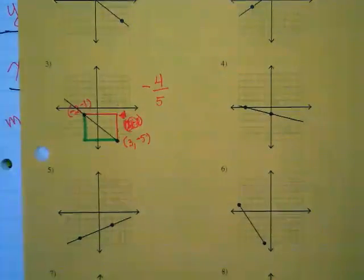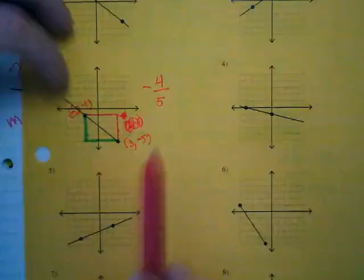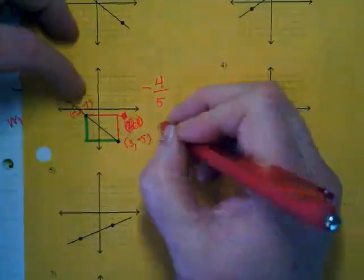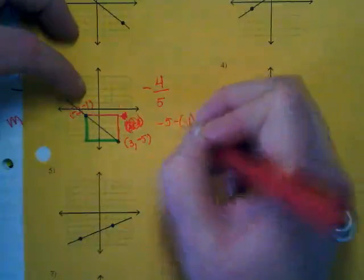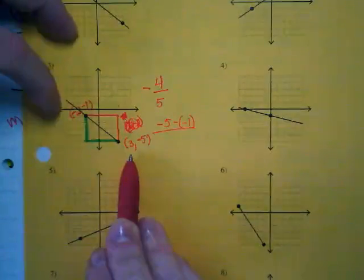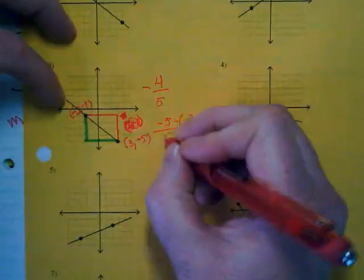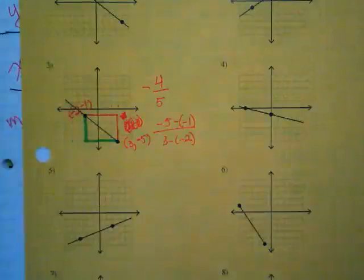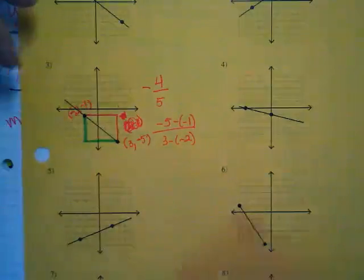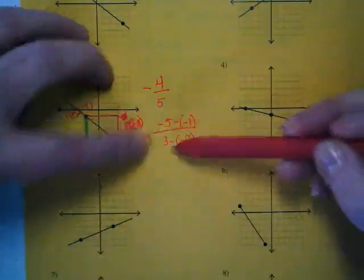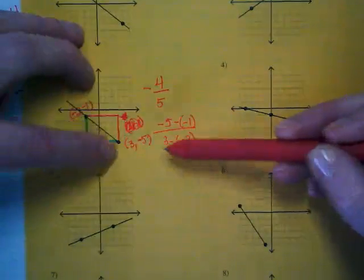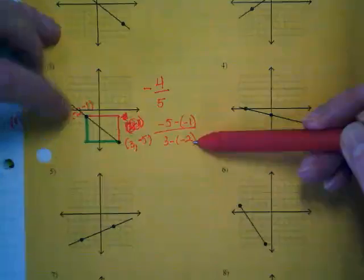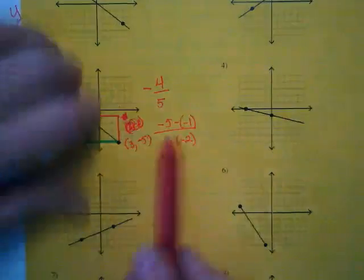This is where that equation comes in with the change in y over the change in x. If I take negative five and negative one and subtract them - negative five minus a negative one and three minus negative two - that's that slope formula we just looked at. I'm not worried about y sub one, y sub two. I want to make sure that this y matches this x in my coordinate pair, and it does. And I want to make sure that this y matches this x in my coordinate pair, and it does. And I'm just going to subtract.